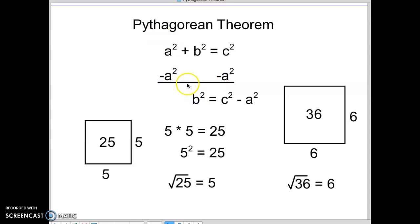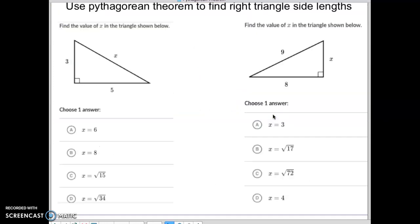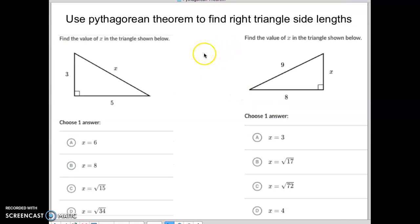And I'm left with a b squared on this side. These are not like terms, so I can't combine them that way. So I just have c squared minus a squared. So another way of saying this, same thing, Pythagorean theorem is b squared equals your c squared minus your a squared side. So we have two different formulas we can use now.